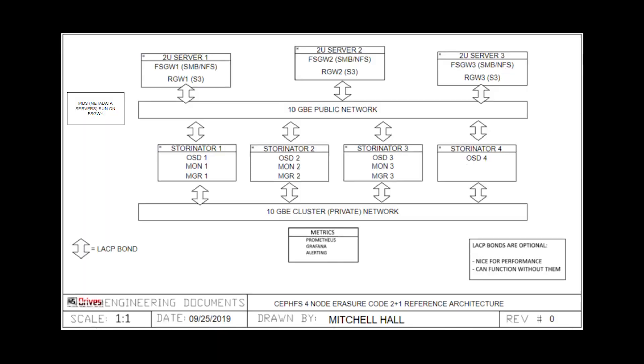Ceph can run on 1-gigabit networks, but we typically recommend at least having 10-gigabit networks, and especially if you can swing it, we like to do LACP-bonded 10-gigabit networks to give you 20-gigabit of bandwidth over your private networks as well as your public networks. Alright, thanks for watching everyone. Hopefully you found some of this interesting and it gave you a better overview of what Ceph is at its core. If you have any questions or comments, be sure to leave them down below. Thanks for watching and we'll see you next week on another Tech Tip.